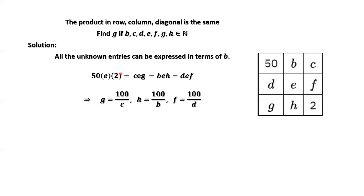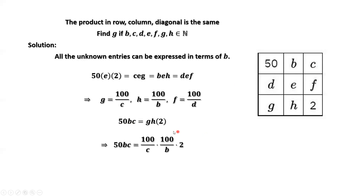Solving this equation, we find H in terms of B. Solving this one with the first one, we find F equals 100 over D. Now, consider 50 times B times C — the product of this row — equals the product of the third row. We replace G by 100 over C, and H by 100 over B.